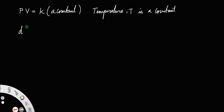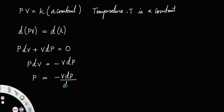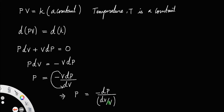When you derive this equation, take the derivative of P — that is, derivative of PV equals derivative of constant K. Using the product rule, we have P dV plus V dP equals zero. Therefore, P dV equals minus V dP, or P equals minus V dP divided by dV, which gives P equals minus dP divided by dV over V. This is the volumetric strain, and dP divided by volumetric strain gives the bulk modulus.